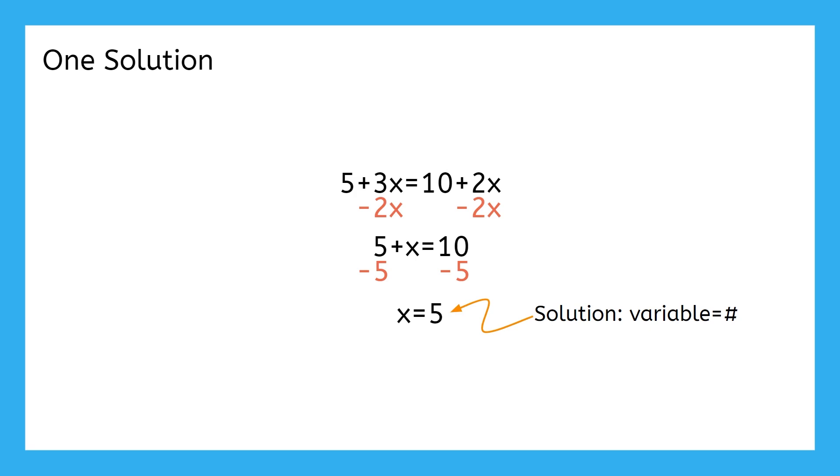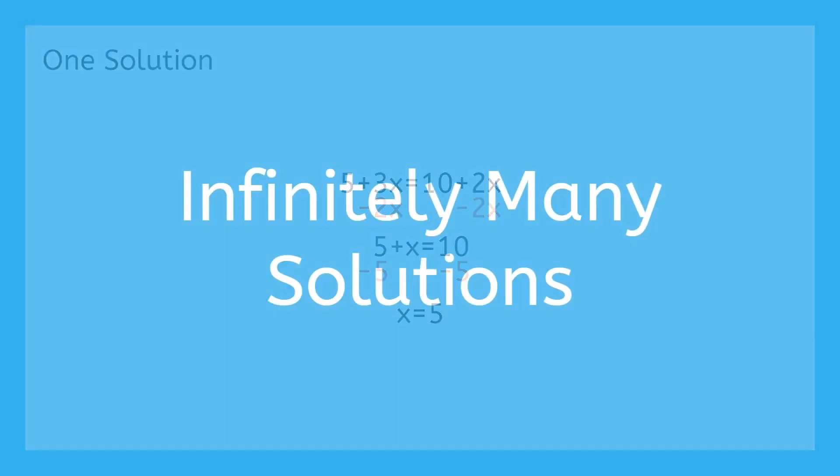But sometimes, weird things happen when we try to isolate the variable. For example, some equations have infinitely many solutions, which makes them look different. When an equation has infinitely many solutions, it means that you can put any real number into the equation and it will make the equation true.